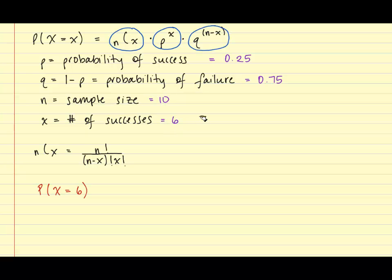So using this information, we are going to plug it into our first part of the formula. For this example, n is 10 and x is 6. And so I have 10 factorial over the quantity of 10 minus 6 factorial times 6 factorial. And that value is equal to 210.